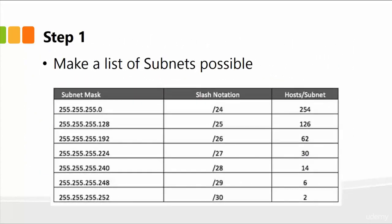Here's step one. The first step is to make a list of subnets possible. So the given subnet mask starting from 255.255.255, slash 24, can support 254 hosts. Similarly, we create 255.255.255.128, which is slash 25, with 126 possible hosts on that subnet. And likewise, we continue on just simply borrowing one bit — from slash 24 to 25 to 26, 27, and so on. So that's the first step: make a list of subnets possible.